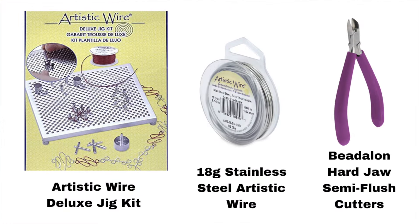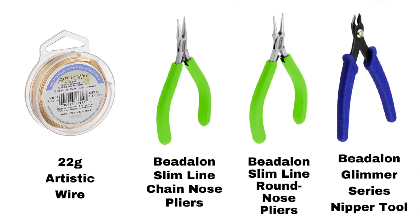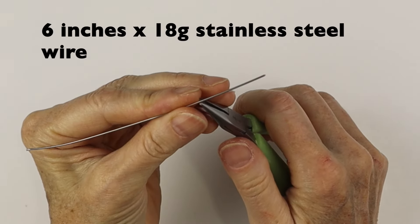There's an option to use the Artistic Wire Deluxe Jig Kit. I need 18 gauge stainless steel artistic wire and some hard jaw semi-flush cutters to cut the wire. I also have 22 gauge artistic wire, the Beadalon slim line chain nose pliers, the round nose pliers, and the nipper tool. You will need some head pins, and I'm using my precision round nose pliers and the Beadalon bail making pliers.